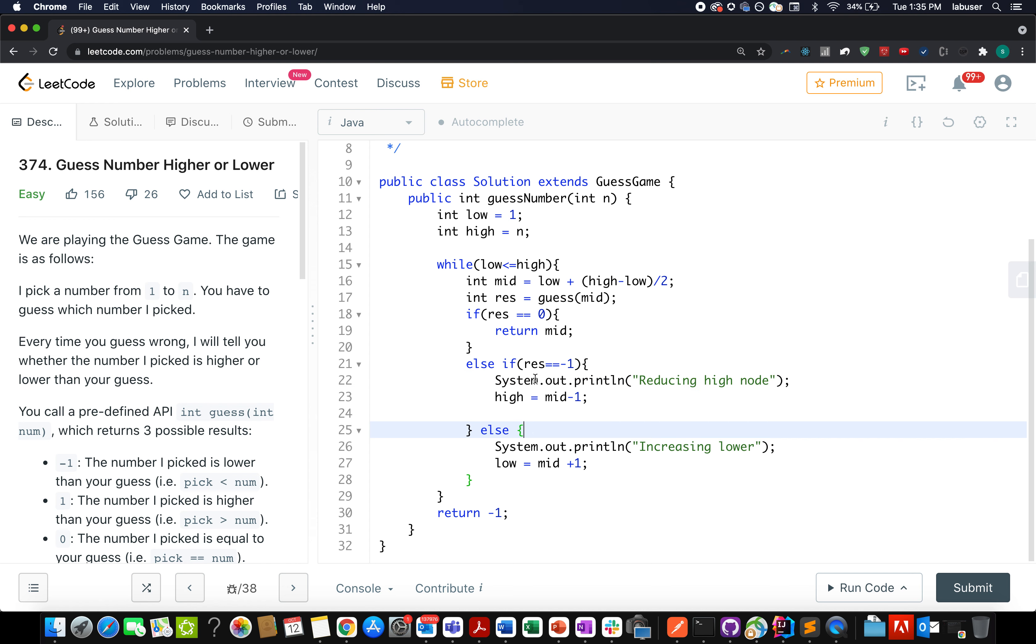Otherwise, if result happens to be one, that means we need to increase the lower bound. And we update low to mid plus one. Once we are done with this loop, if there's no such case where we are able to retrieve a result of zero, we simply return minus one. That's for the safety case.